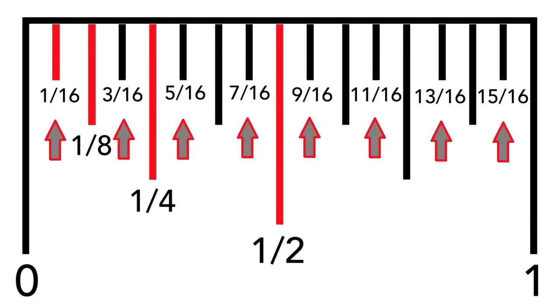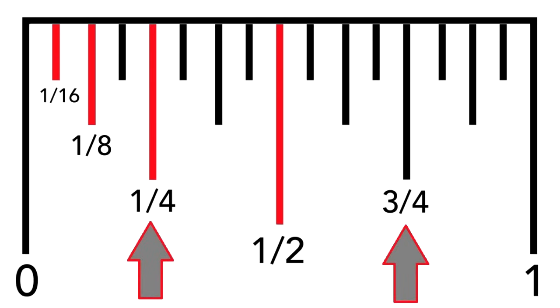Obviously, the same thing works for the fourths, but there are only two of them. 1 and 3. Let's name all the fractions here. The big one in the middle is 1 half. That makes this one 1 fourth. And this one 3 fourths.